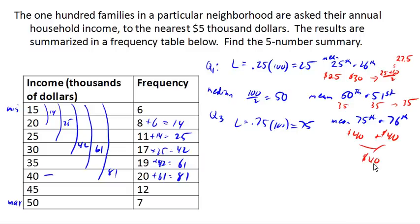So let's go ahead and write our five number summary now. Our minimum is 15,000. Our quartile 1 value was 27.5,000. Our median was 35,000. Quartile 3 was 40,000. And our maximum was 50,000. And so there is the five number summary for this income data.